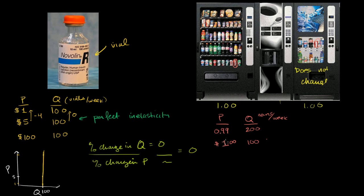Now, what happens if instead of lowering the price by a penny, you raise the price by a penny? So instead of $1, you're at $1.01. Well, now everyone's going to go to the other vending machine. They're going to say, even a penny out, might as well walk to this one — assuming everything else is equal. So then this machine is going to sell zero.